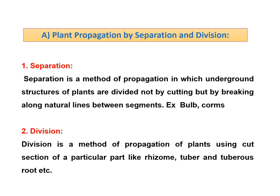Separation is the method of propagation in which underground structures of the plant are divided, not by cutting but by breaking along the natural lines between the segments. They are naturally divided from the plant along such segment lines, and from the segment line we can divide and use them for planting. For example, bulbs and corms.